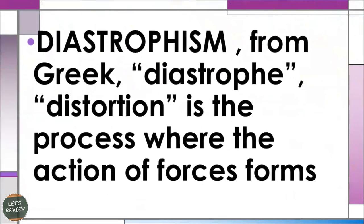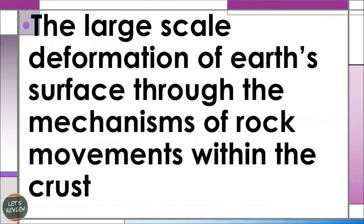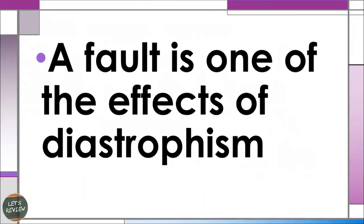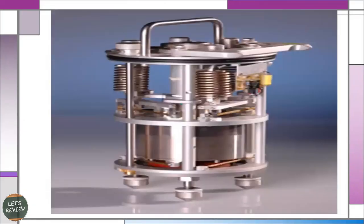Diastrophism comes from the Greek word diastrophe, meaning distortion. It is the process where the action of forces forms large-scale deformations of Earth's surface through the mechanism of movement within the crust. A fault is one of the effects of diastrophism, and it is detected with the use of a seismometer.